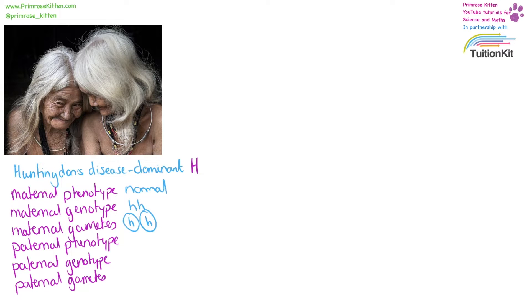The paternal phenotype — he is going to be affected by Huntington's, which means he is going to be capital H, lowercase h. His gametes will then be capital H and lowercase h.